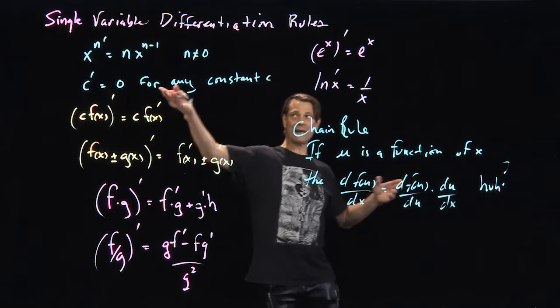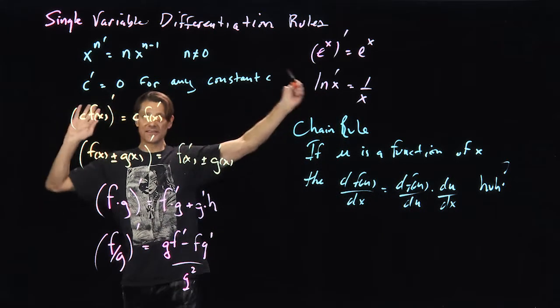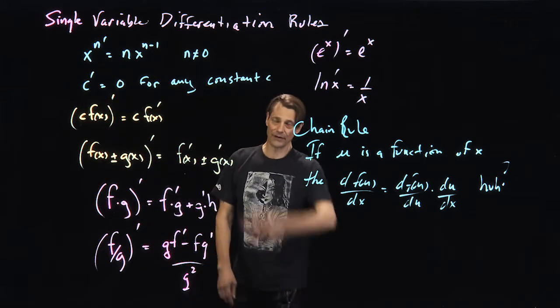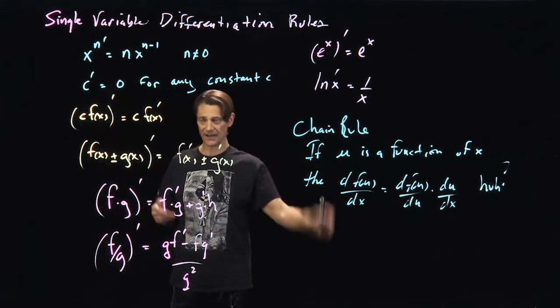I just want to remind you the basic rules of differentiation. The derivative of x to the n is just n times x to the n minus 1, for n not equal to 0. Because if n is 0, then it's a constant. The derivative of a constant is 0 for any constant.